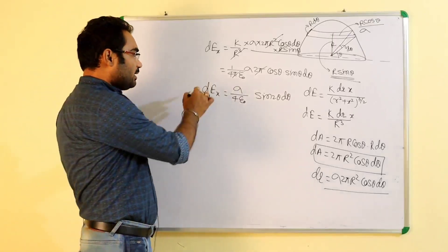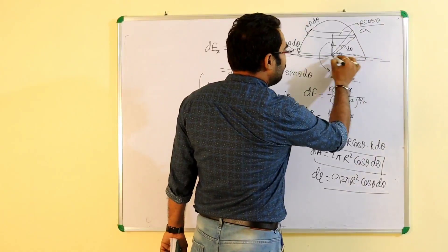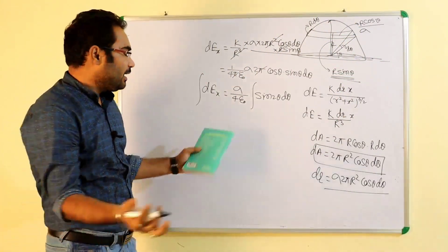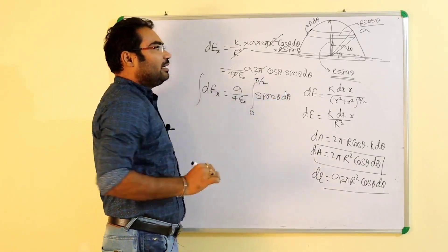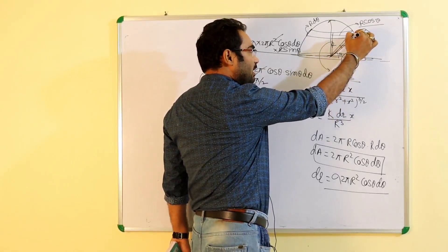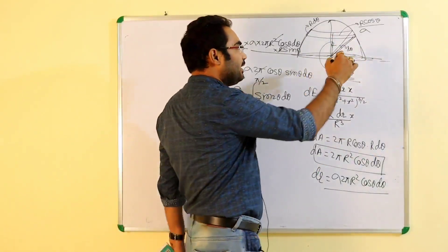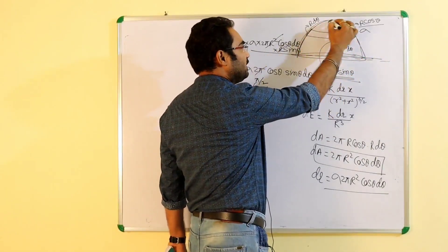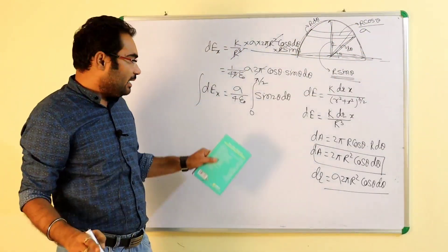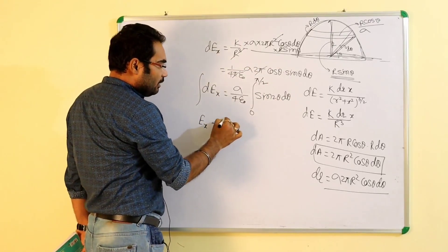Ab integration asani se ho sakta hai. Integration ka limit kahan se kahan tak? Theta ka value 0 se lekar π/2 tak karenge — poora ka poora hemisphere ban jayega. Kyunki jab theta angle jab aap chale gaye hain to idhar aur idhar dono taraf yeh hemisphere ban raha hai. To jab yahan se theta ka value π/2 kar dijiye to poora hemisphere ban jayega. Isliye theta ka limit 0 to π/2 hoga.